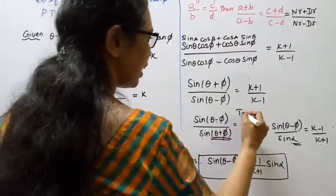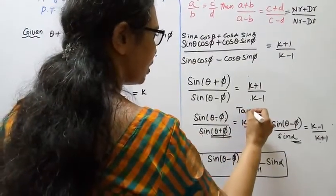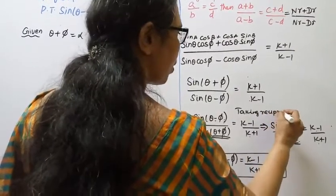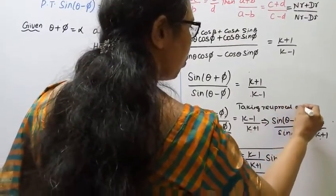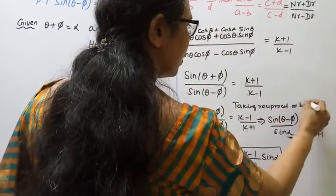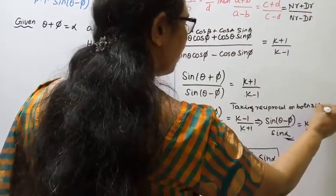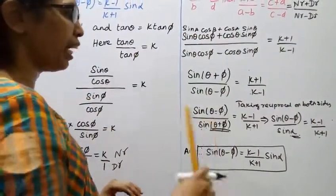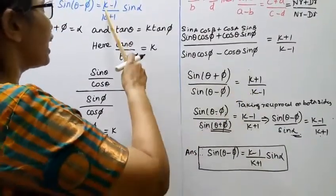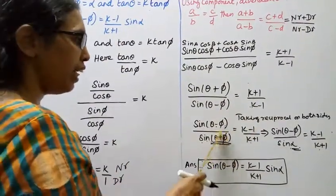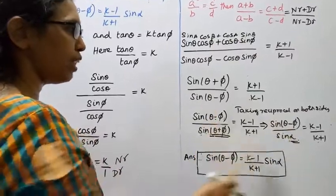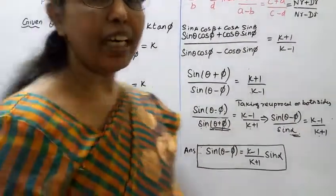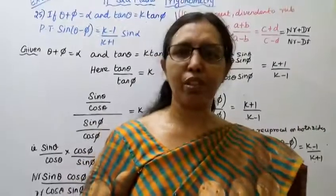In the same way, taking reciprocals on both sides gives us the required result. Sin(theta minus pi) equals (k minus 1) by (k plus 1) sin alpha, where theta plus pi equals alpha. Thank you. This channel helps you to get 100 marks. Subscribe to the channel.